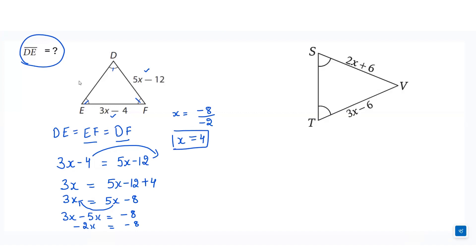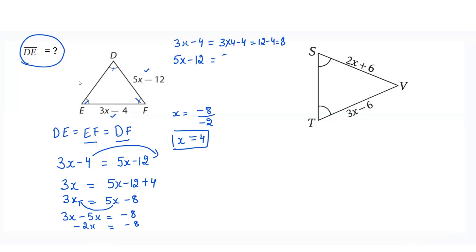If we put this value of x into 3x minus 4 or into 5x minus 12, we'll get the same side length because they are the side lengths of the equilateral triangle. So 3 times 4 minus 4 equals 12 minus 4 equals 8. And 5 times 4 minus 12 equals 20 minus 12 equals 8. All three sides are 8 units. So the value of DE is 8 units.